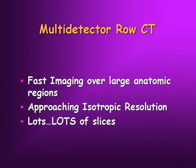Multi-detector — what's all this about? You know all this. You get fast imaging over large anatomic regions. Mike showed you the whole abdomen and pelvis in six seconds with a 64-detector scanner with no respiratory motion whatsoever. The voxels, depending on how you set your detector configuration and the speed of your acquisition, get very close to isotropic resolution, and you get lots and lots of slices.